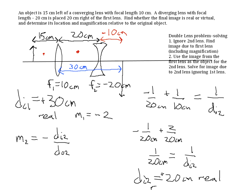The magnification due to the second lens is M2 = −DI2/DO2 = −20/−10. The two negatives cancel, giving M2 = +2.